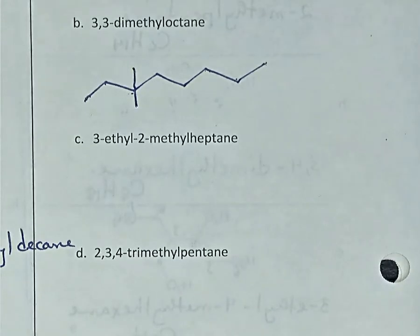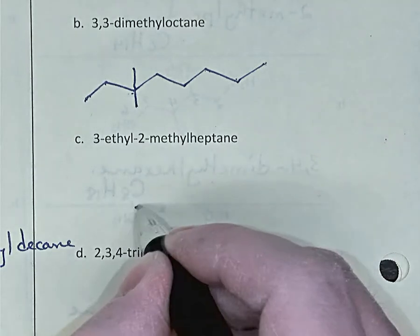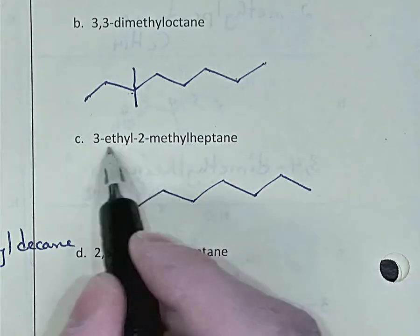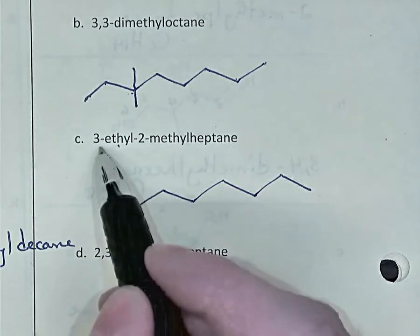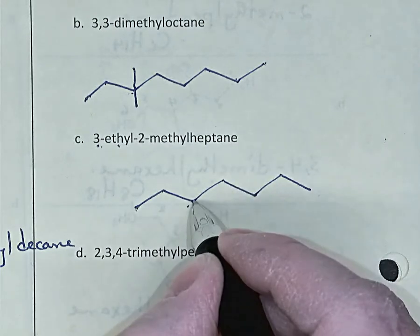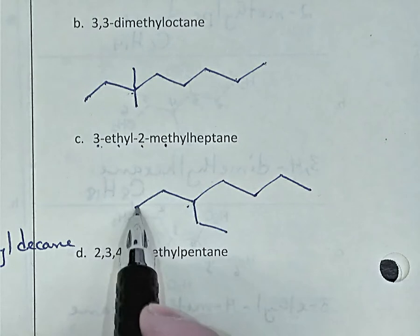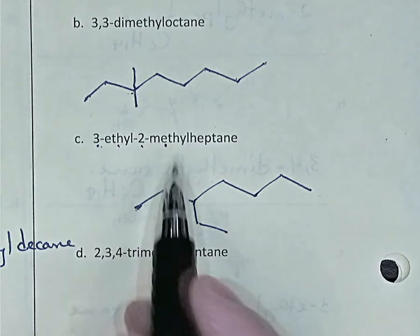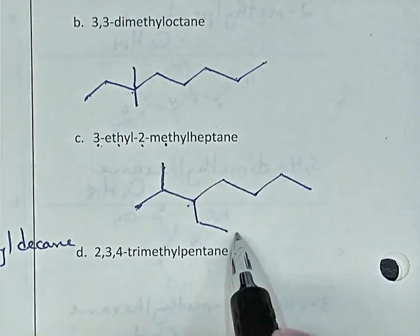3-ethyl-2-methylheptane. The parent is heptane — hept means seven carbons: 1, 2, 3, 4, 5, 6, 7. Ethyl is a two-carbon branch, methyl is a one-carbon branch. The two-carbon branch is on the third carbon, so numbering from this side: 1, 2, 3 — I'll put a two-carbon branch there. Carbon number two has a one-carbon branch. If I started numbering from the left to get the ethyl branch, I continue counting to get the methyl branch — so carbon-2 is this carbon. There is 2-methyl, 3-ethyl, heptane.